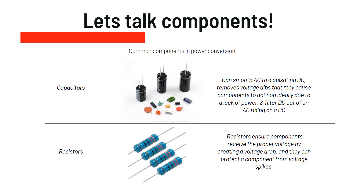Capacitors can also be used as a filter. DC cannot pass through a capacitor, so it can filter out DC from an AC signal riding on a DC signal. Say you have an AC signal of maybe 200 millivolts and a DC voltage of 5 volts — you'll end up with 5 volts DC and the AC signal of 200 millivolts riding on that 5 volt DC signal. You can filter out the DC from that using the capacitor.